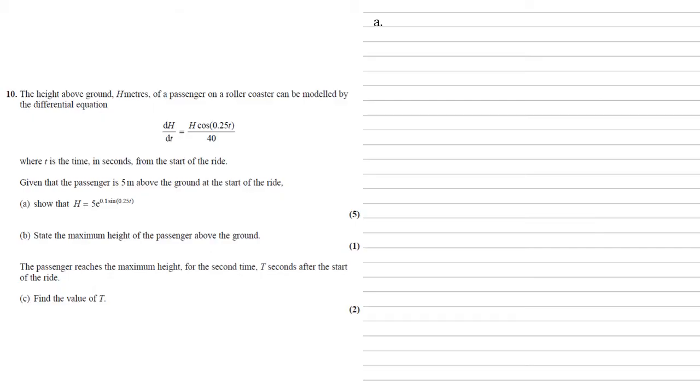The first thing to notice is that we're going to integrate with respect to t, but on the right hand side we've got both h and t. So to sort that out, we're going to divide both sides by h, giving us 1 over h, dh by dt, equals cos 0.25t over 40.